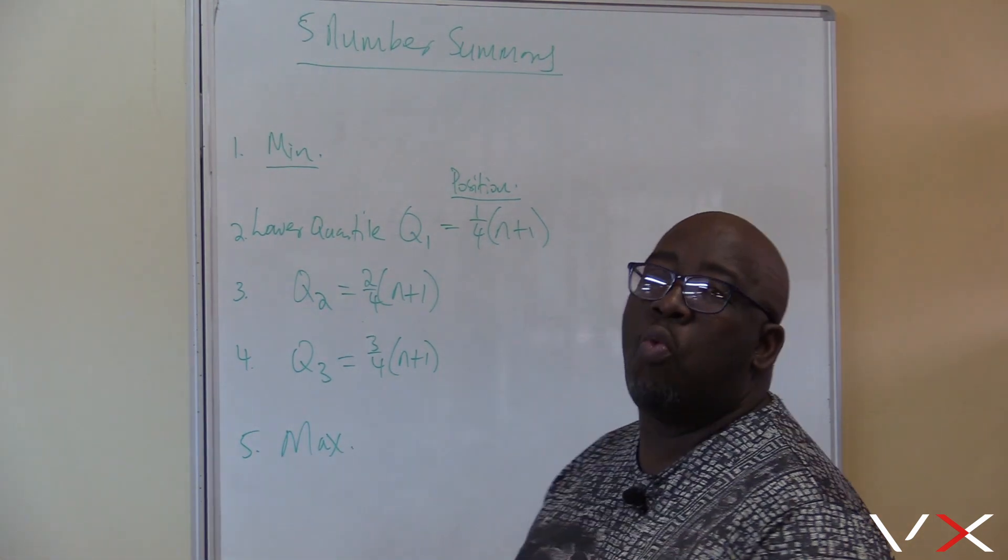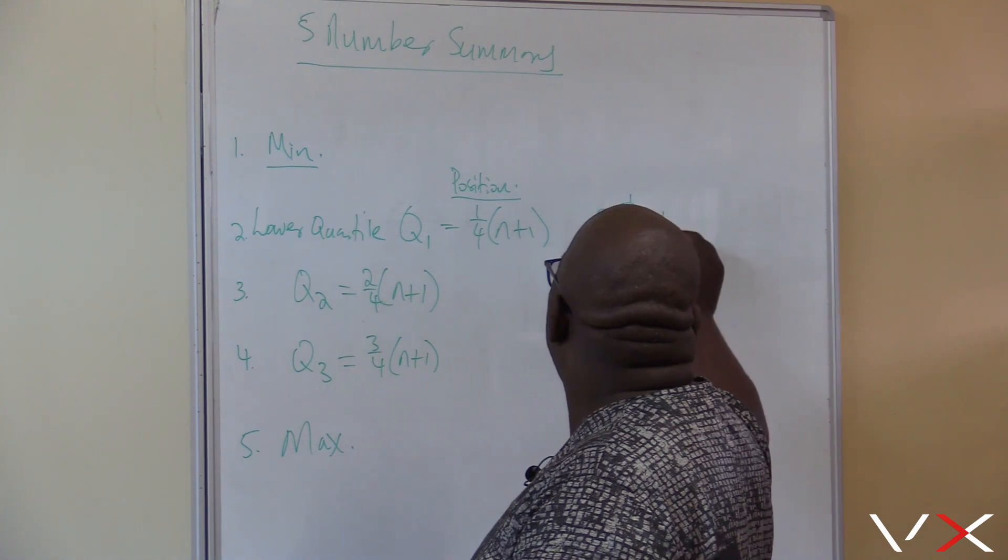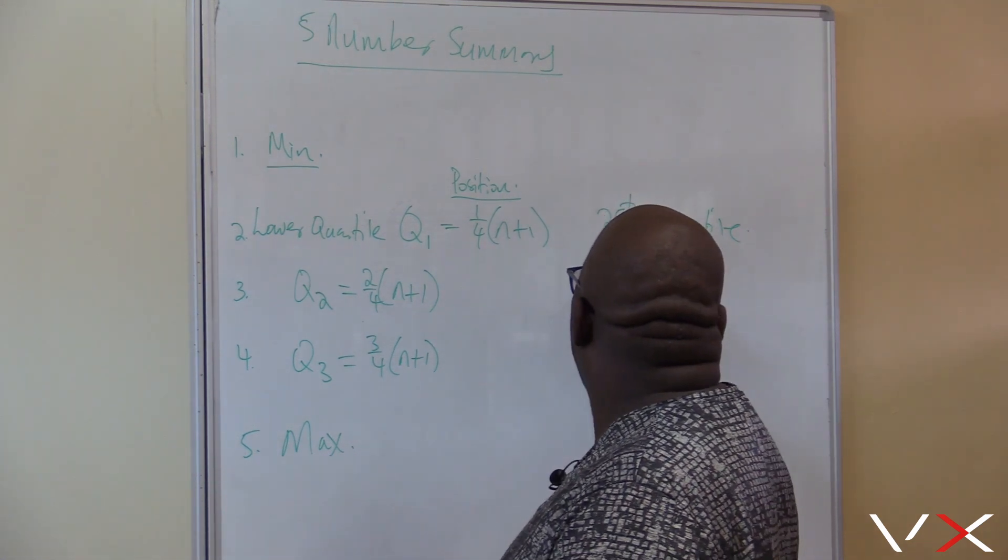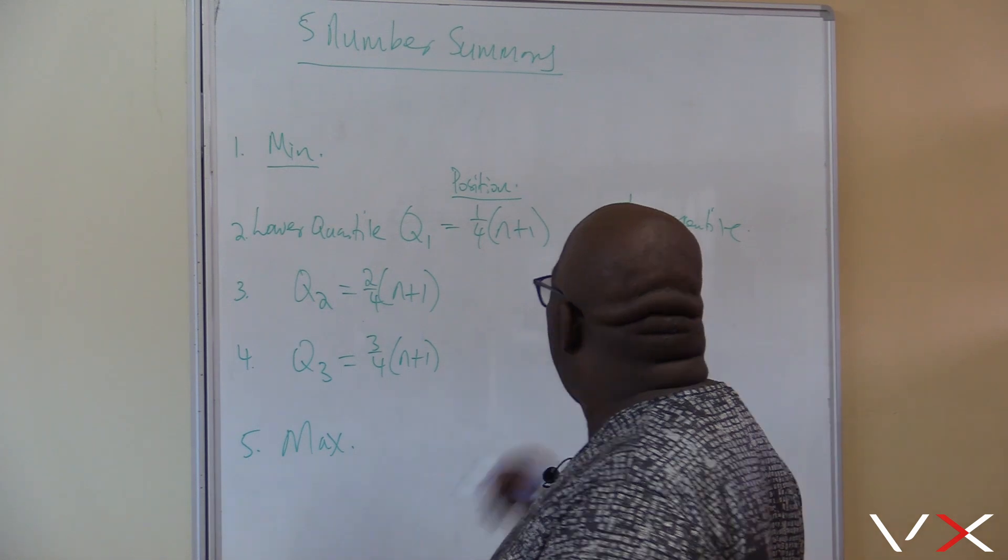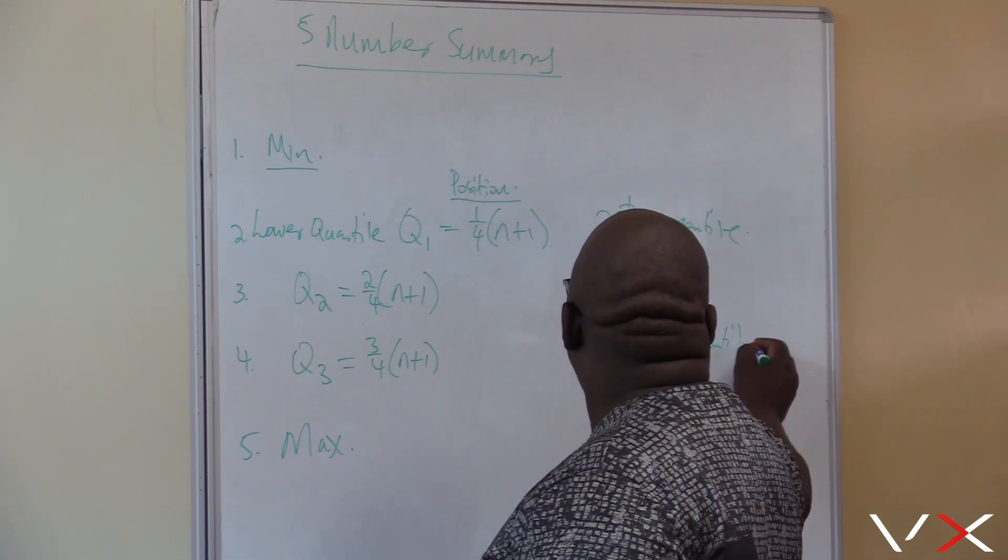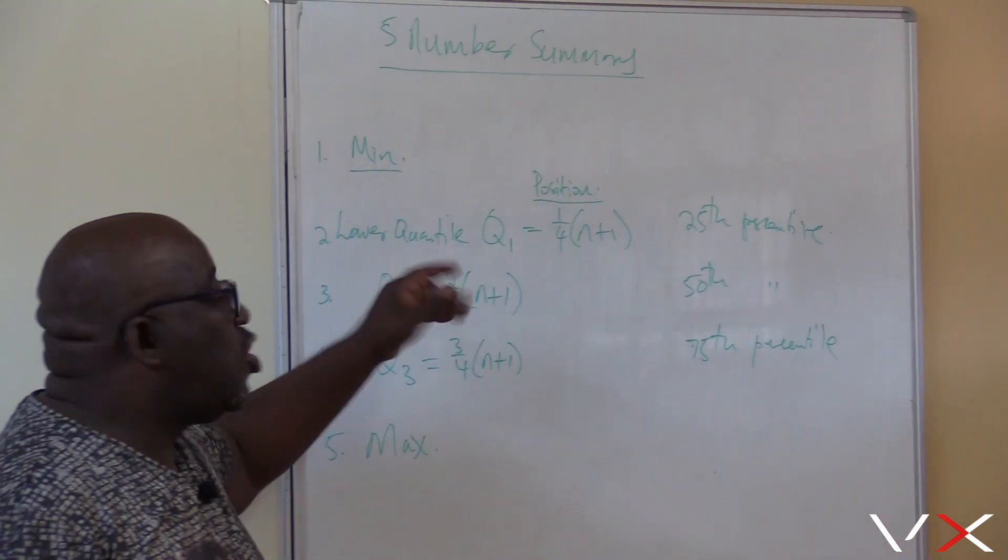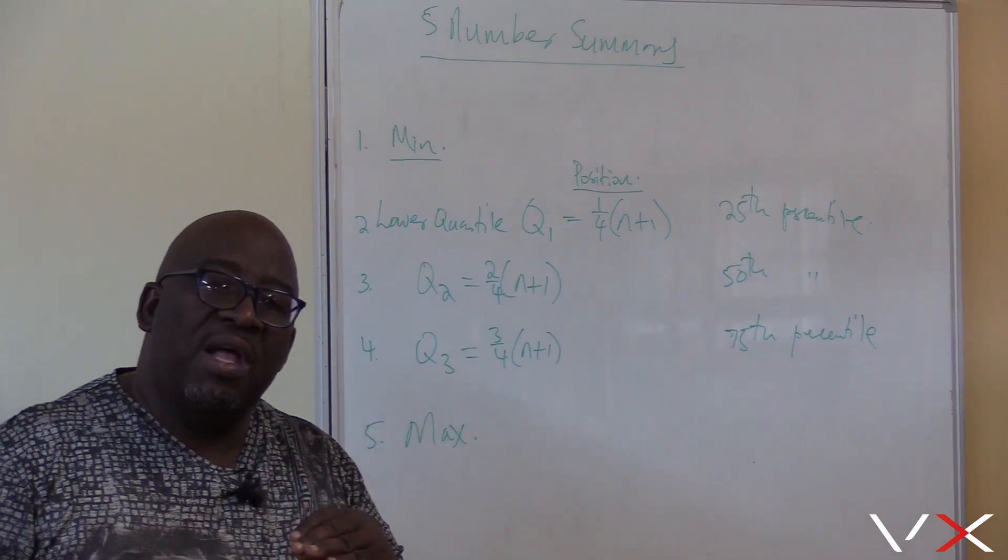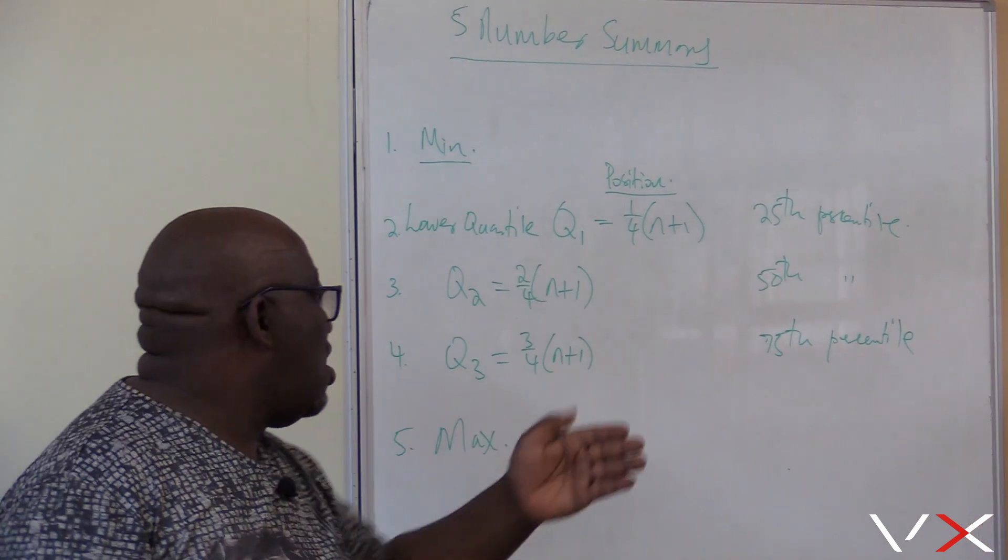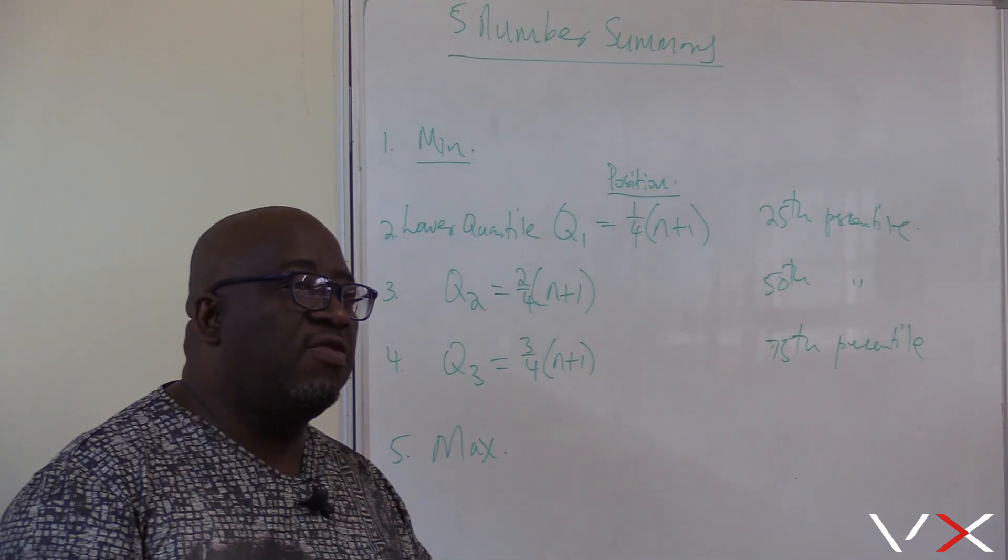Remember that Q1 is sometimes referred to as the 25th percentile. Q2 is referred to as the 50th percentile. Q3 is referred to as the 75th percentile. So don't get confused when we change names into percentiles. The 25th percentile is Q1, but at times we'll be talking about the upper 25th percentile. It's no longer the lower quartile. When we talk of the upper 25th percentile, we're talking of Q3 there, which is normally the 75th percentile.